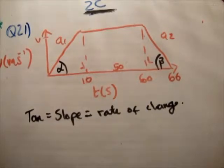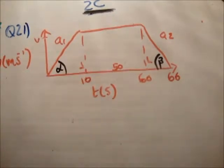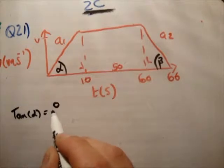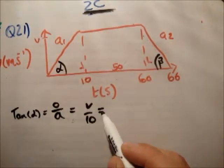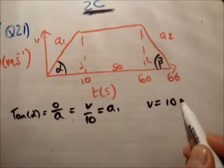So let's get tan alpha and tan beta. So tan alpha is the opposite over the adjacent is equal to V over 10 is equal to A1. Therefore, V is equal to 10A1.